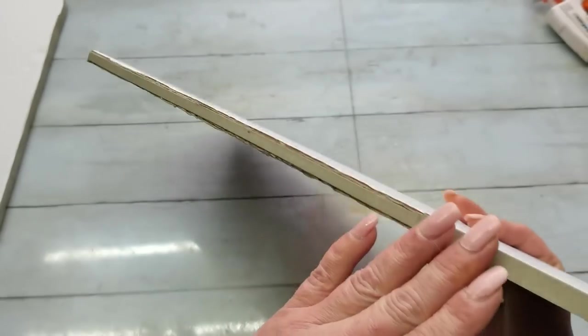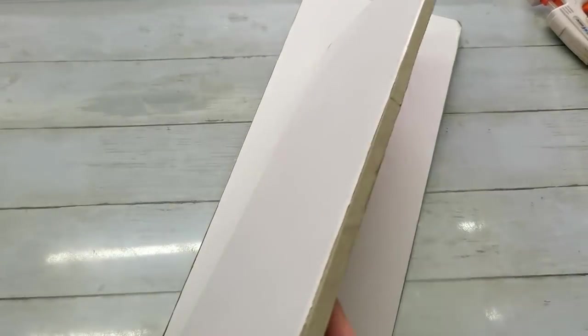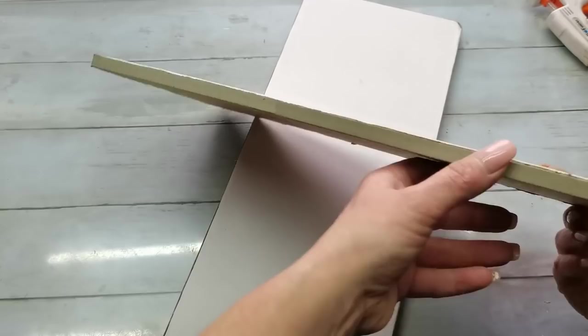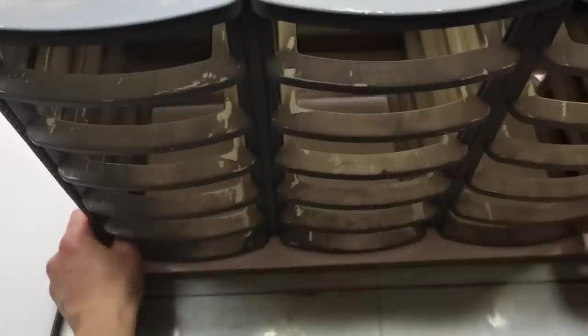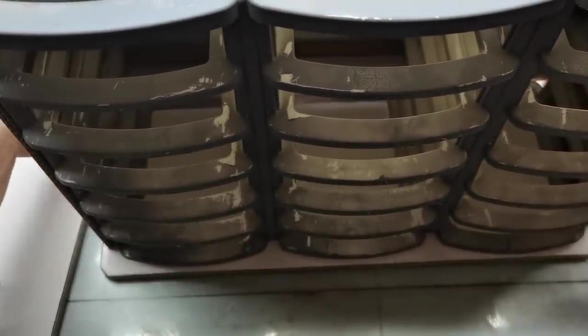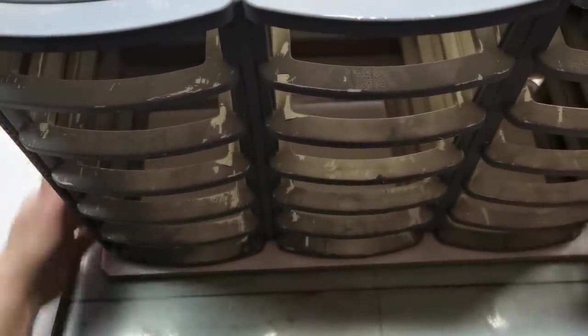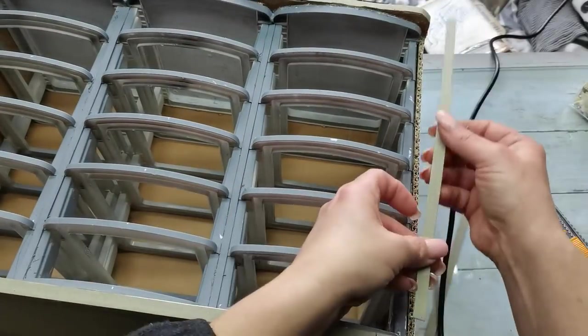So I did glue those chipboard strips all around of the bottom part and top part for my storage system. And then I took my frame and I glued it to that bottom and then I glued that top part on the top of this storage system. I hope you will understand my explanation.